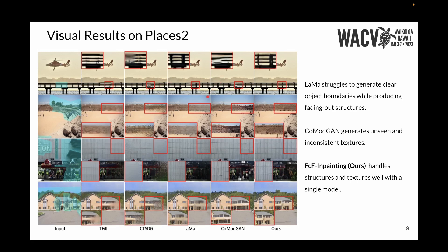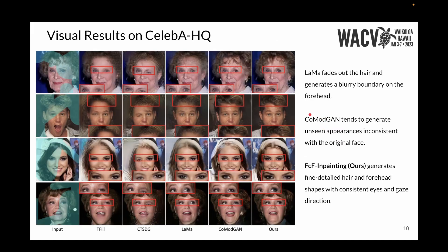We observe that Lama generates fading out regions as the size of the hole gets larger on Places2 images, and ComodGAN is not able to generate texture regions. Our method, on the other hand, is able to generate equally well textures and structures at the same time with a single model. Similarly, on face images, Lama generates faded out regions in the forehead and ComodGAN generates inconsistent eye regions, while our method generates fine-grained hair details and correct eye regions.